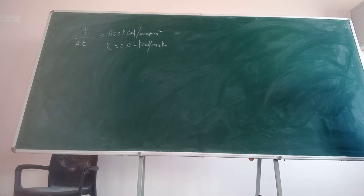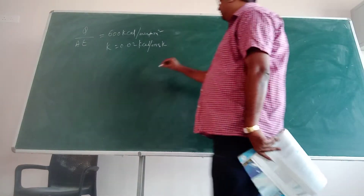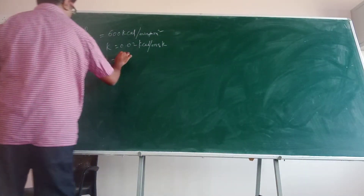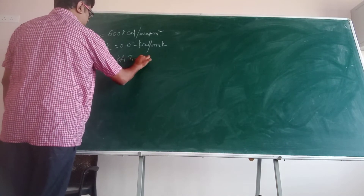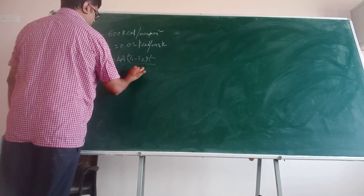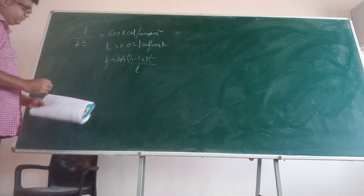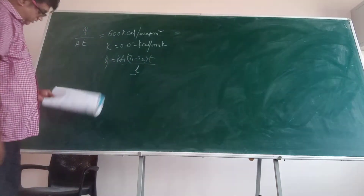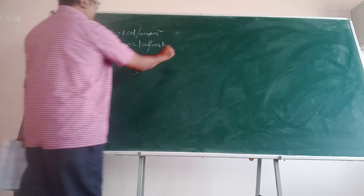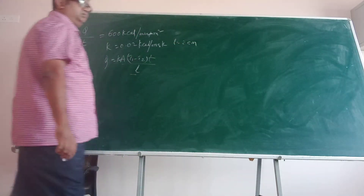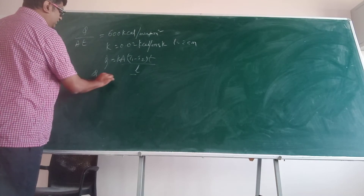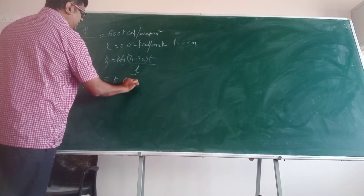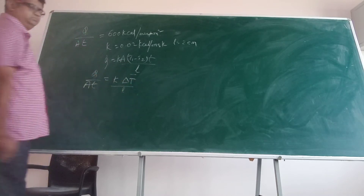We are supposed to calculate the temperature difference. Our equation was: q equals A times k times (T1 minus T2) divided by L. This L is the thickness of the block, given as 2 cm. In the question they have given q by A, so it is k times delta T divided by L.